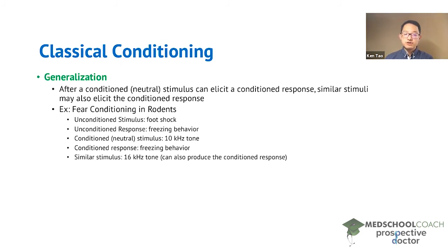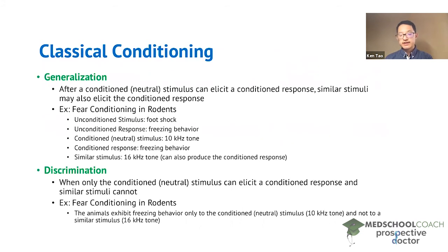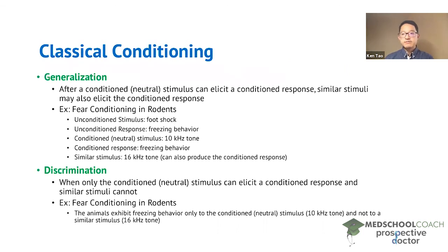Discrimination is effectively the opposite of generalization. This occurs when only the conditioned or neutral stimulus can elicit the conditioned response and similar stimuli cannot. In the case of fear conditioning in rodents, if you present the 10 kilohertz tone and the rodents exhibit freezing behavior, but you present the 16 kilohertz tone and the animal does not exhibit freezing behavior, then we see that the rodents are able to discriminate between these two stimuli. This is occurring when the rodent responds with the conditioned response to only the conditioned stimulus, and similar stimuli do not produce a conditioned response.